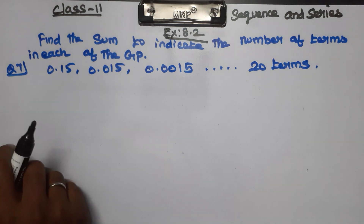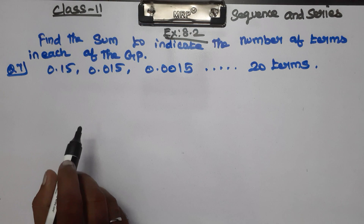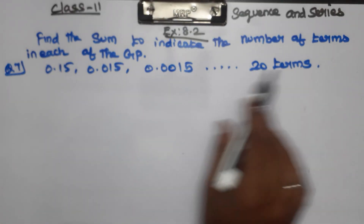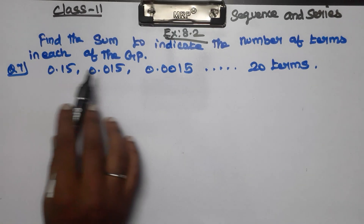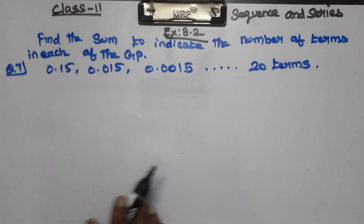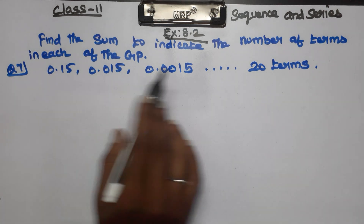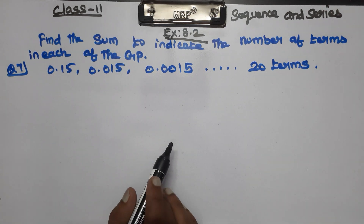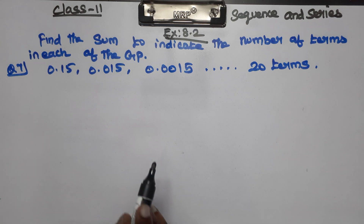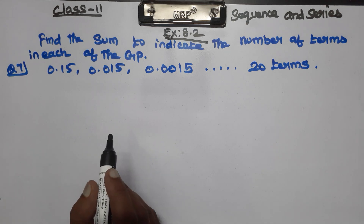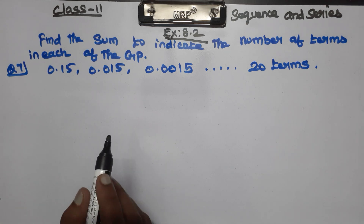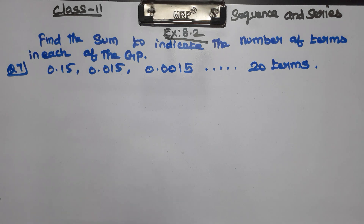Question number 7: Find the sum of the indicated number of terms in the given GP. We need to find the sum using the sum formula. There are two ways to approach this.